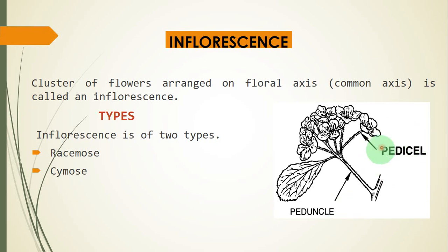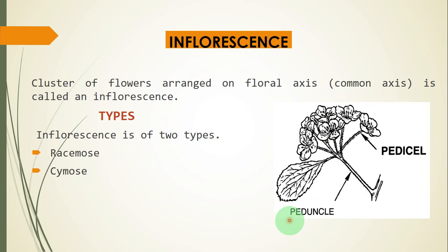Pedicel is the stock of the flower. You can see here: this is one flower, this is a second flower, this is a third flower, and so on. The main stock is called the peduncle — the stock of the inflorescence is called the peduncle. There are basically two types of inflorescence: one is racimose and the other is cymose.